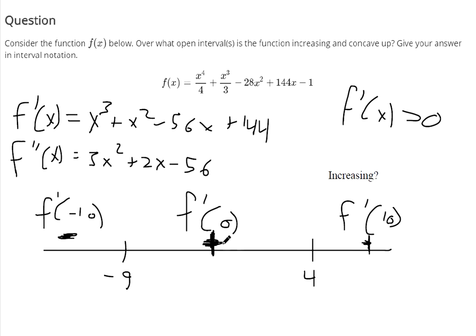So where is this function increasing? It's increasing from negative 9 to 4, parentheses, union 4 to infinity. Because at exactly x equals 4, it's neither increasing nor decreasing.